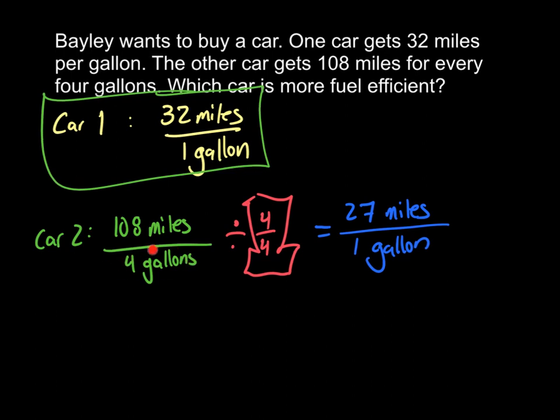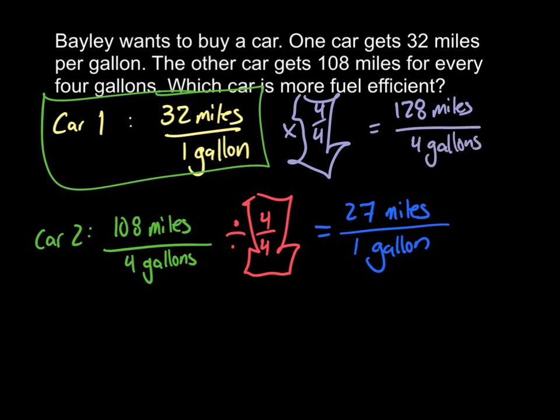Another way that you could have done this is you could have said that I know that this is 4 gallons here. So I can come in, and I could actually multiply car 1 by 4 over 4 using that giant one, which gives me 128 miles over 4 gallons. And that's a good way to check your work to make sure that you did everything correctly.